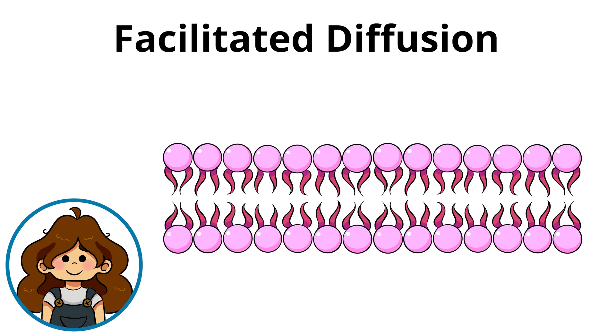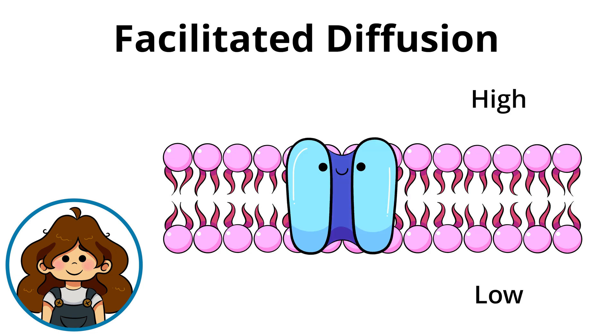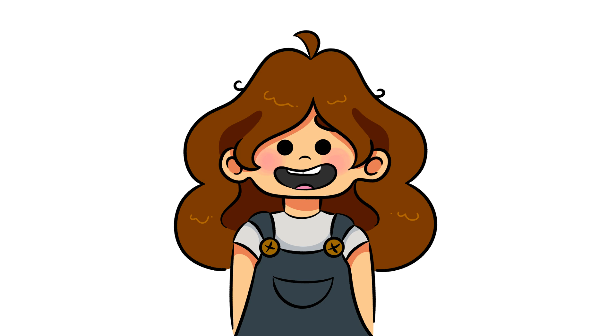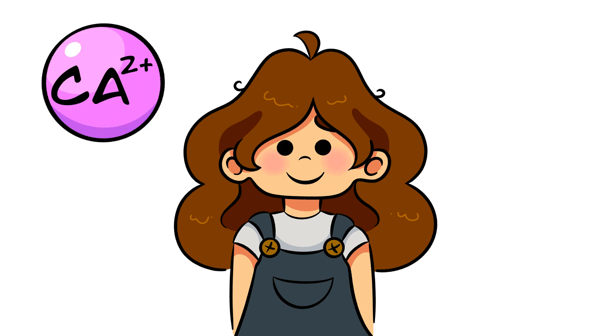Continuing on, there's facilitated diffusion, where special proteins in the membrane act like tunnels to let the larger molecules through. Thanks for the help, bud. In some cases, charged molecules like calcium or chloride also need help crossing the membrane.